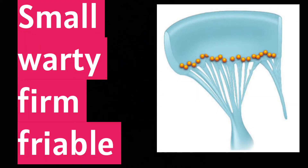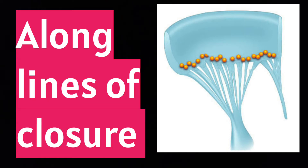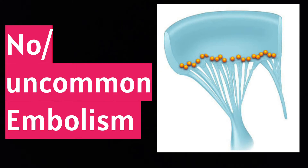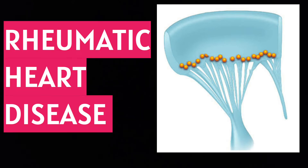In rheumatic fever, vegetations are small, warty, firm, and friable, located along the lines of closure. They are sterile — no organism is present. Embolism is uncommon or absent. These are present in rheumatic heart disease.